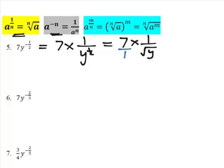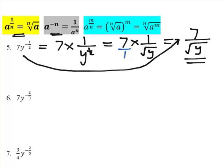And that 7 is 7 over 1, 7 times 1 is 7 over root y. And really, you're expected to be able to go from here straight to here. With practice, it's easy to do.